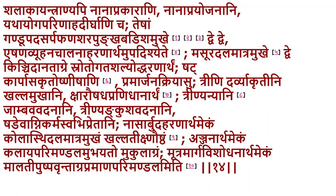That covers the nadi yantras. The next category is the shalaka yantra — shalaka yantrani api nanaprakarani nanaprayojanani yathayoga. One type is a smooth surface tube used to probe and detect differences in resistance. Sarpafana mukha is used for vranastha udvhikaranam — retraction — to hold the edges of wounds properly. Retractors we use now are of this sarpafana mukha shape. Shara punkha mukha is used for talana — holding an object firm. Badisha is a hook-like instrument.